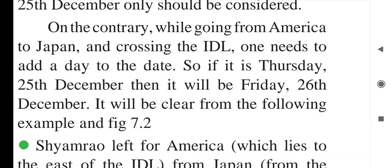On the contrary, while going from America to Japan and crossing the International Date Line — America is in the western hemisphere, going west to east — one needs to add a day and change the date. So if it is Thursday 25th December, it will become Friday 26th December. This will be clear from the following example and figure 7.2. Going from America to Japan, west to east, you add one day and change the date.